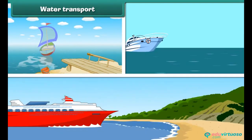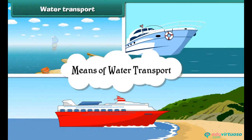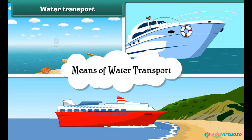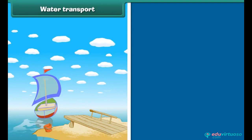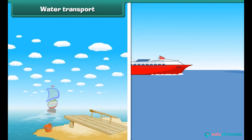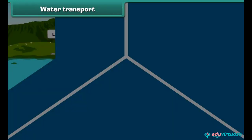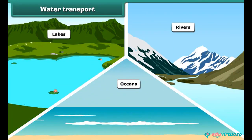You have seen boats, steamers and ships — these are the means of water transport. These vehicles run through waterways. Boats run in lakes and rivers, while ships run in deep and large water bodies. Lakes, rivers and oceans are examples of waterways.